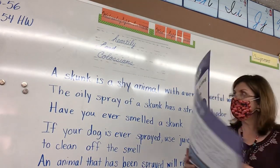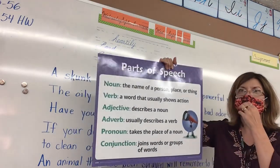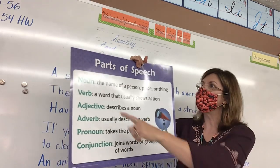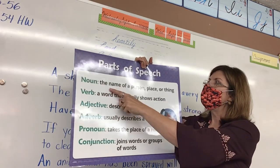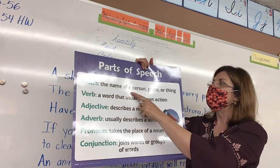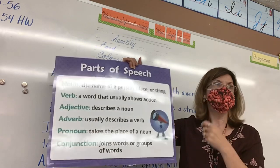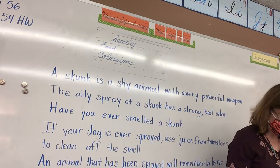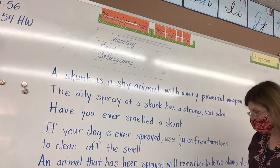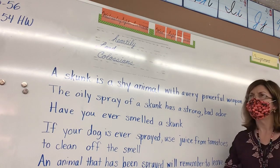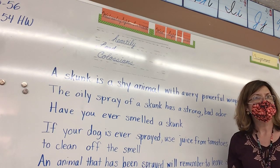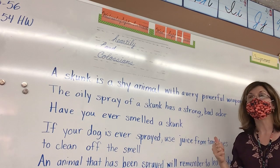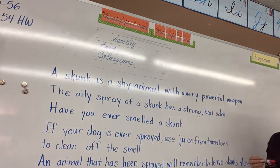Before we get to the sentences on the board, we're going to talk about nouns, because we are going to find the nouns in the sentence as well as tell what kind of sentence they are. A noun is the name of a person, place, or thing. Let's look at these sentences on the board first of all, read them, and decide what kind of sentence they are and what kind of punctuation they have.